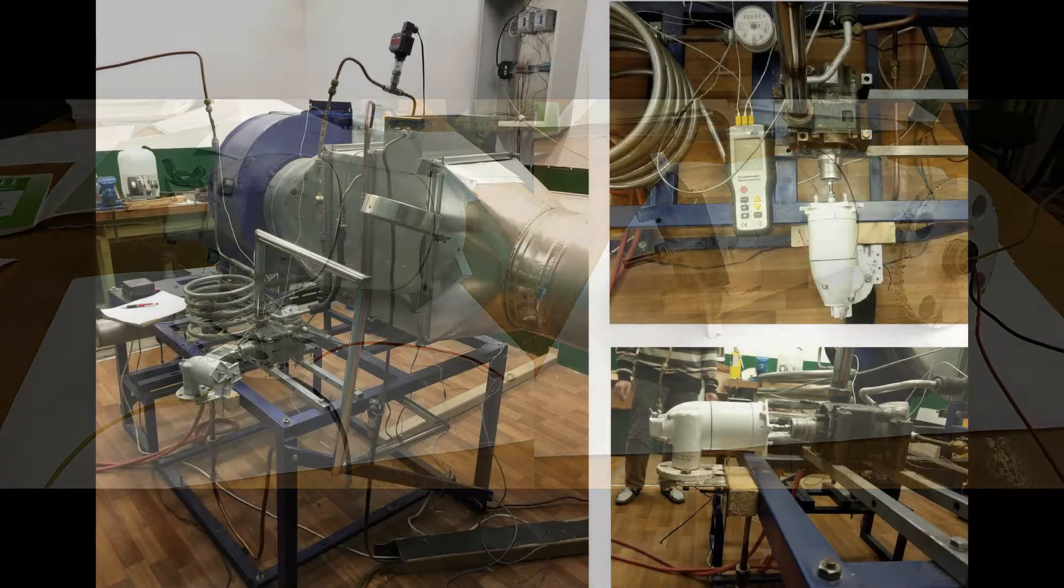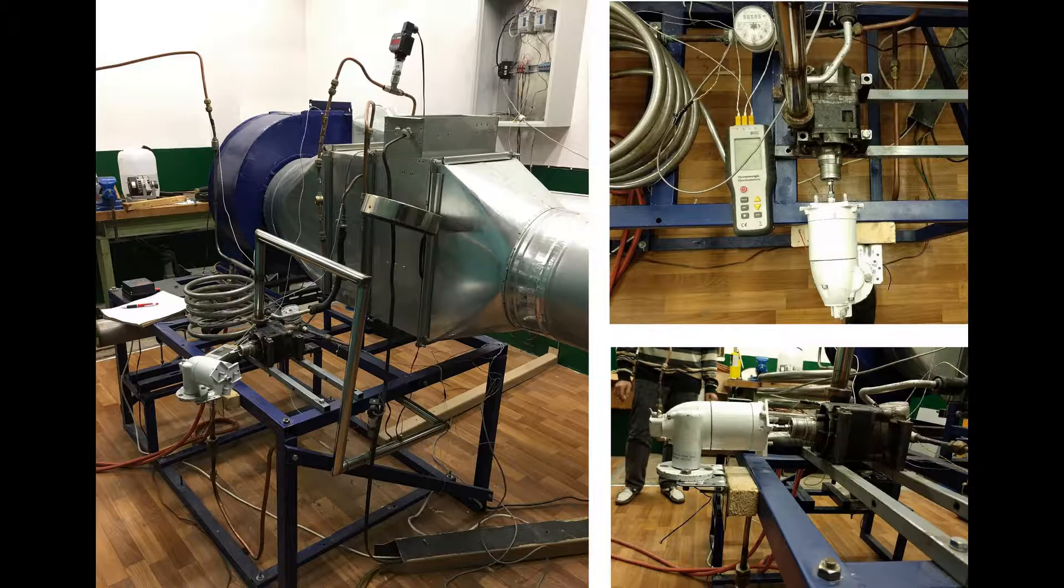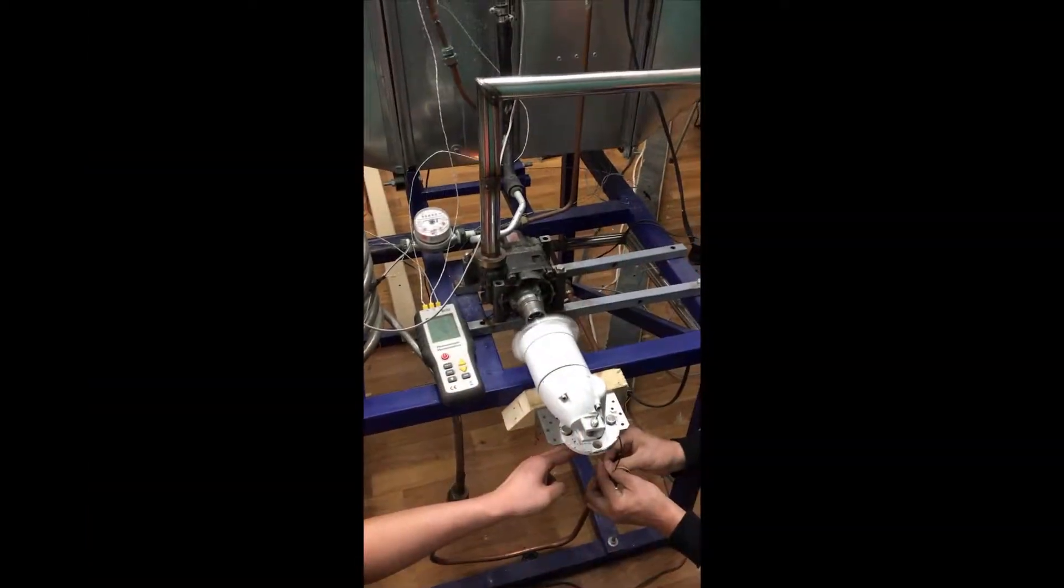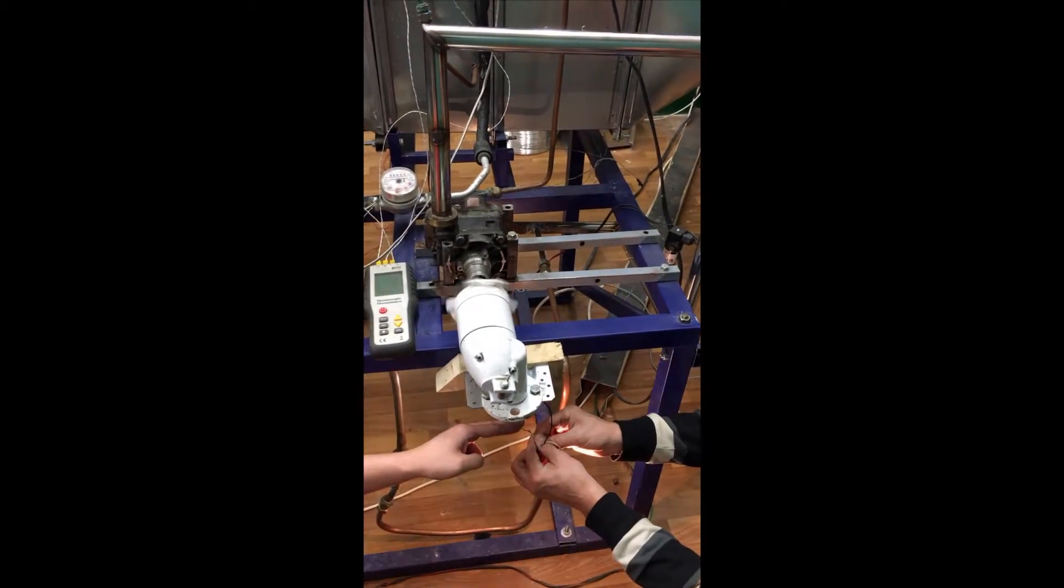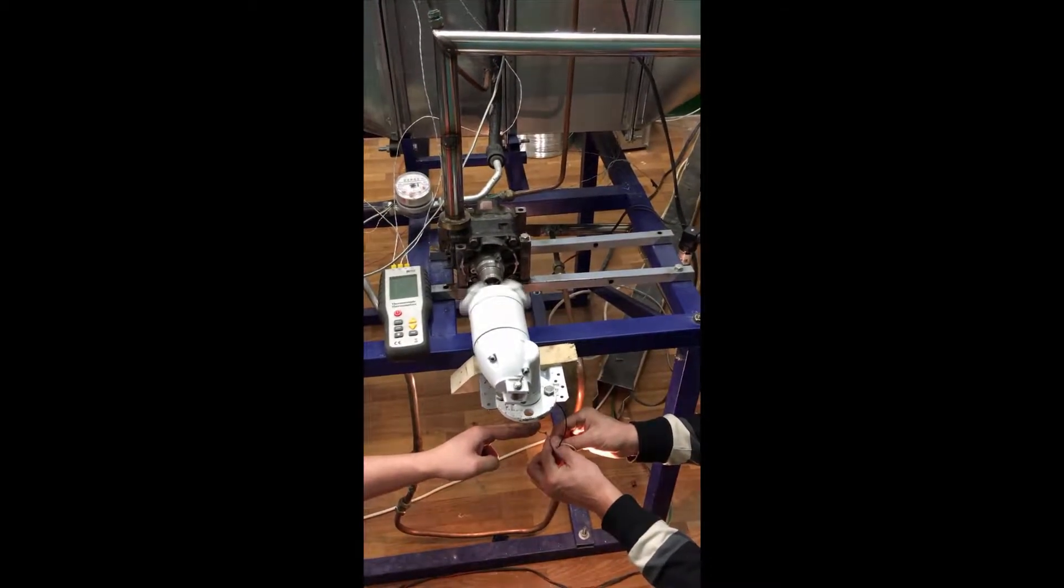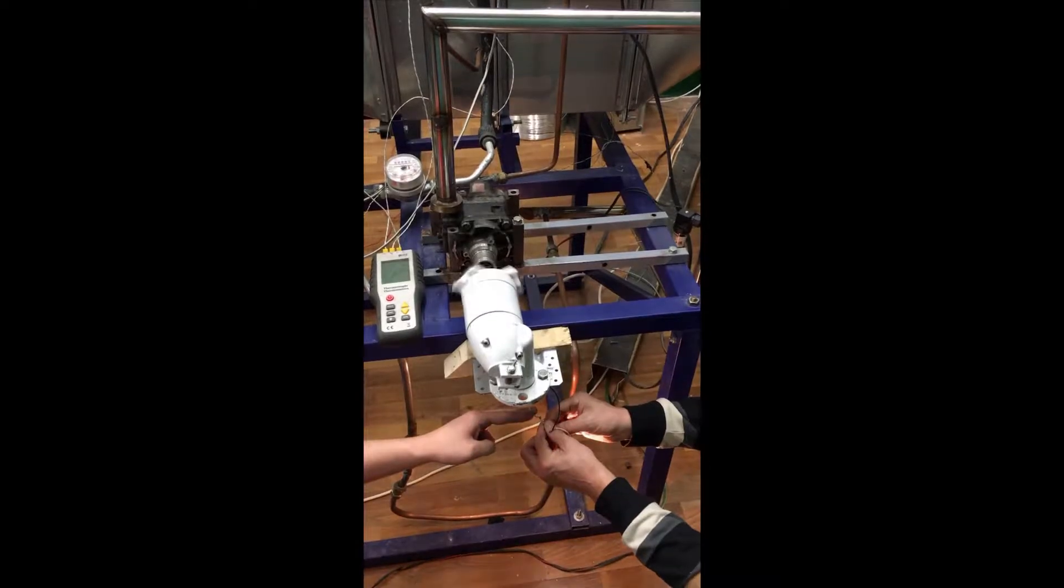This is our small scale ORC when the wind generator is connected with a scroll expander. This video shows how our small scale ORC works when the wind generator is connected to the load - it is above 60 watts.